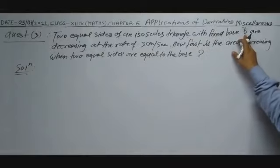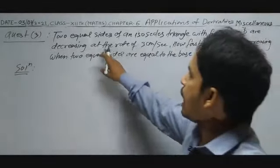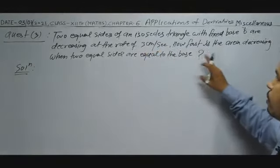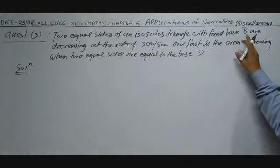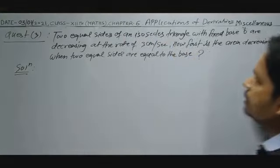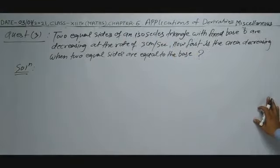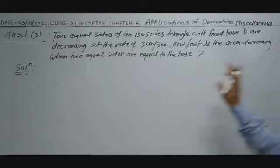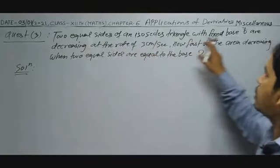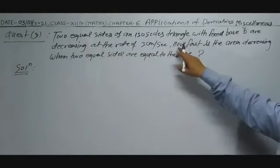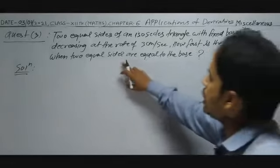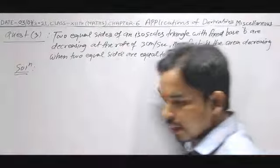The base B is given and is not decreasing — only the two equal sides are decreasing at 3 cm per second. How fast is the area decreasing when the two equal sides are equal to the base? This is the necessary condition.